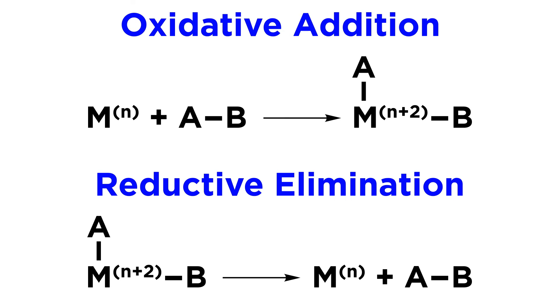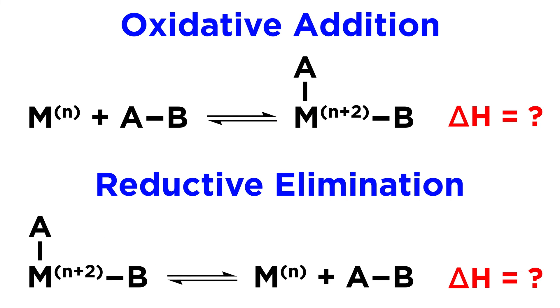We must remember that since oxidative addition and reductive elimination are reverse processes, the products of one can serve as the reactants of the other, and these reactions can both be reversible. Usually one side will be thermodynamically favored, which can be utilized in synthesis.